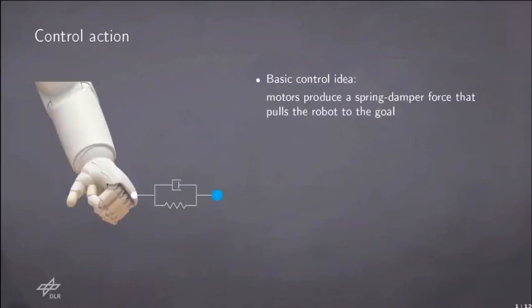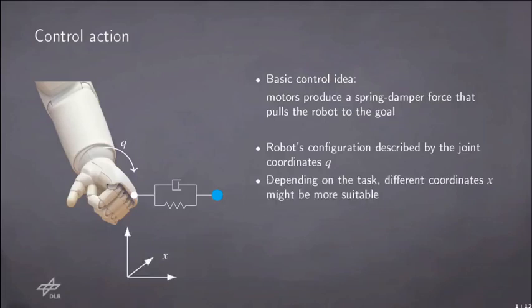Without going into the details of any specific control law, it is quite common that the control action consists in a spring damper force that pulls the robot towards the goal. Although the robot configuration is defined by the joint coordinate q, depending on the specific task that the robot has to execute, it might be more useful to use different coordinates. For example, if the hand of the robot is requested to move in the Cartesian space, it is very useful to use Cartesian coordinates for the task.